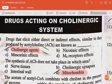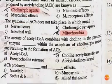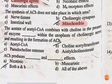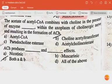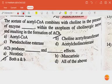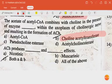The next question: the acetate of acetylcholine combines with choline in the presence of the enzyme choline acetyltransferase within the axoplasm of the cholinergic nerve, resulting in the formation of acetylcholine. Acetylcholine produces both nicotinic and muscarinic effects.